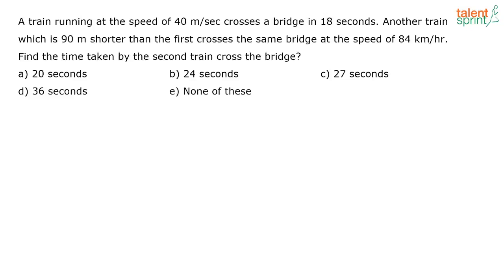What is given here? A train running at a speed of 40 meters per second crosses a bridge in 18 seconds. Another train which is 90 meters shorter than the first crosses the same bridge at a speed of 84 kilometers per hour. Find the time taken by the second train to cross the bridge.